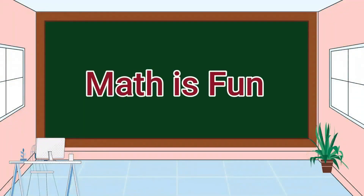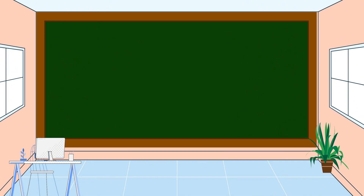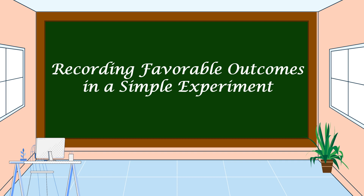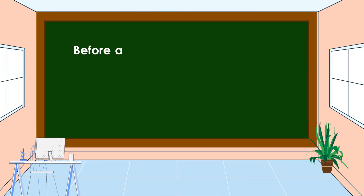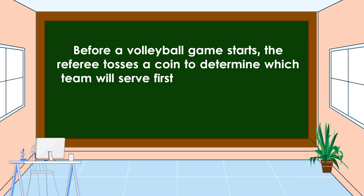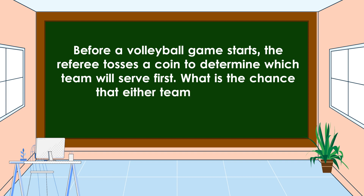Hello everyone, welcome to Math is Fun. Our lesson for today is all about recording favorable outcomes in a simple experiment. Before a valuable game starts, the referee tosses a coin to determine which team will serve first. What is the chance that either team serves first?